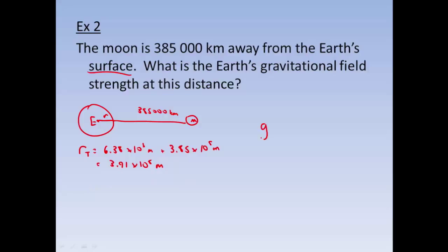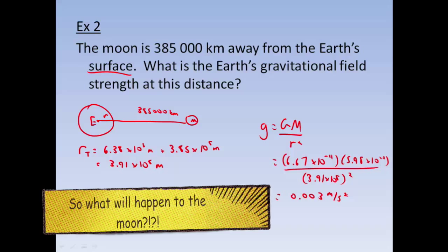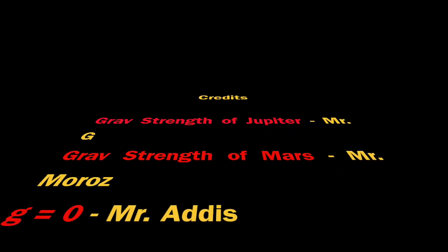So, let's go. g is equal to GM over r squared. 6.67 times 10 to the minus 11 times 5.98 times 10 to the 24. And that's going to be divided by 3.91 times 10 to the 8 squared. To give us a final value of 0.003 meters per second squared. Which means that if we are at the moon, we actually do feel a slight acceleration from the Earth.